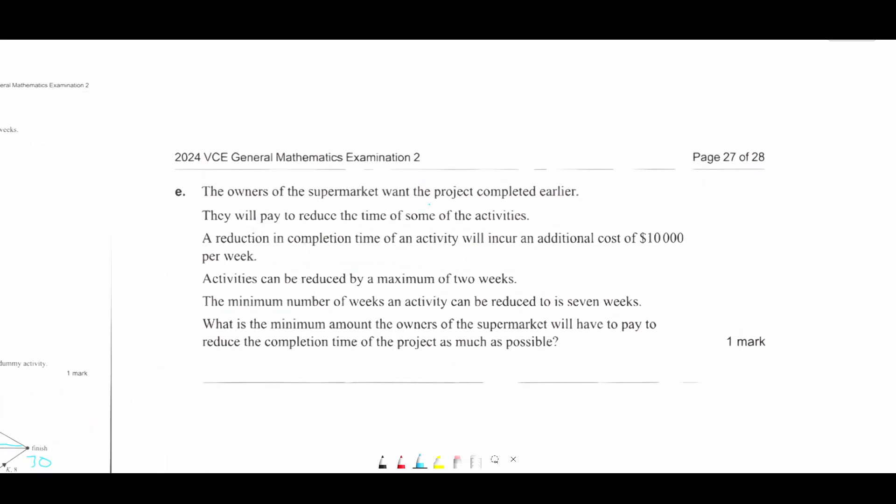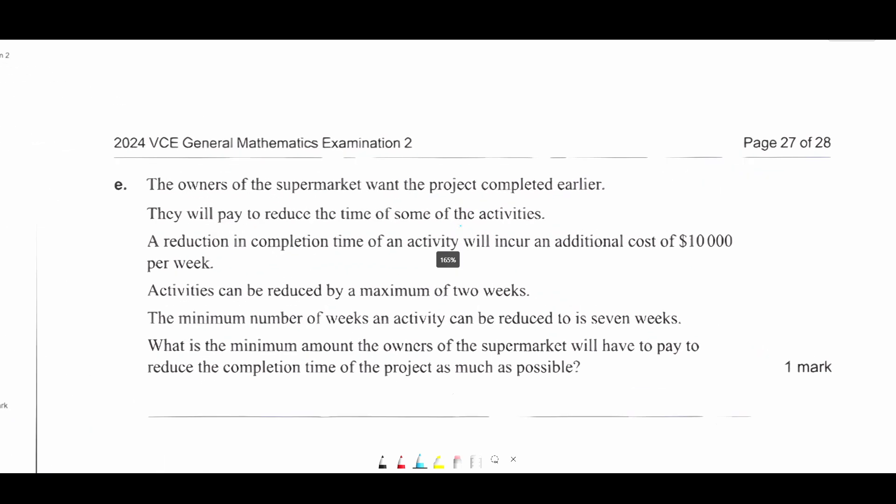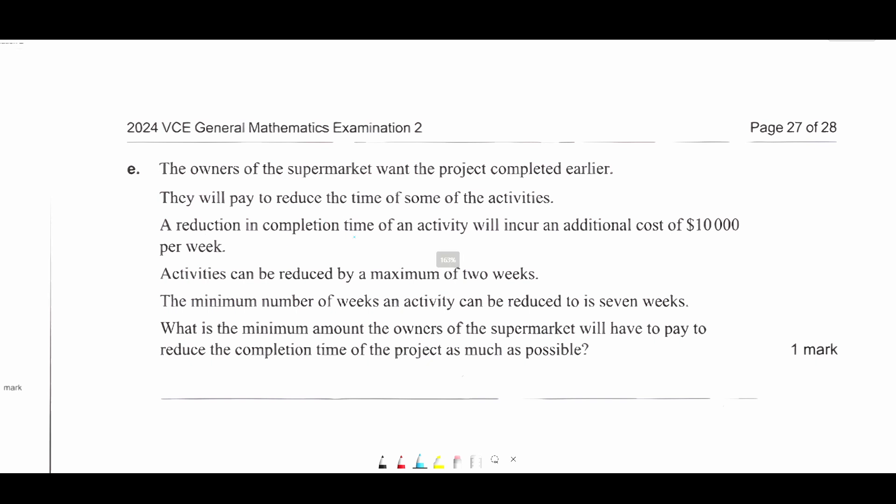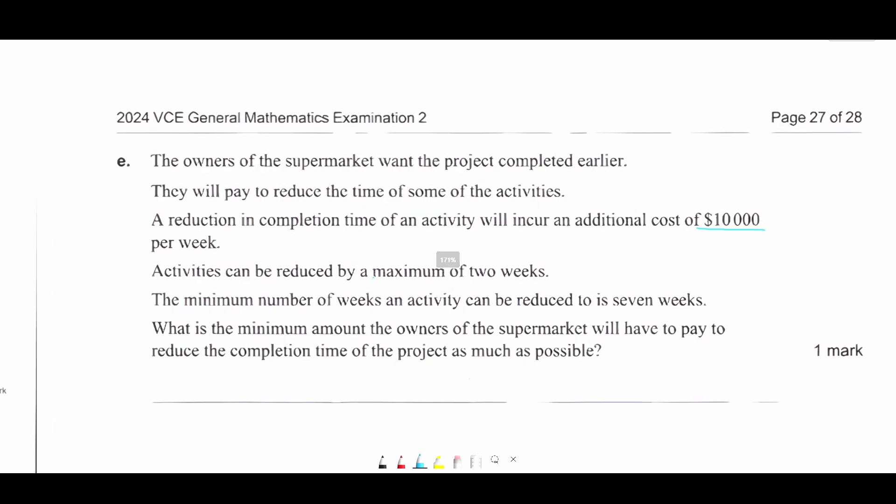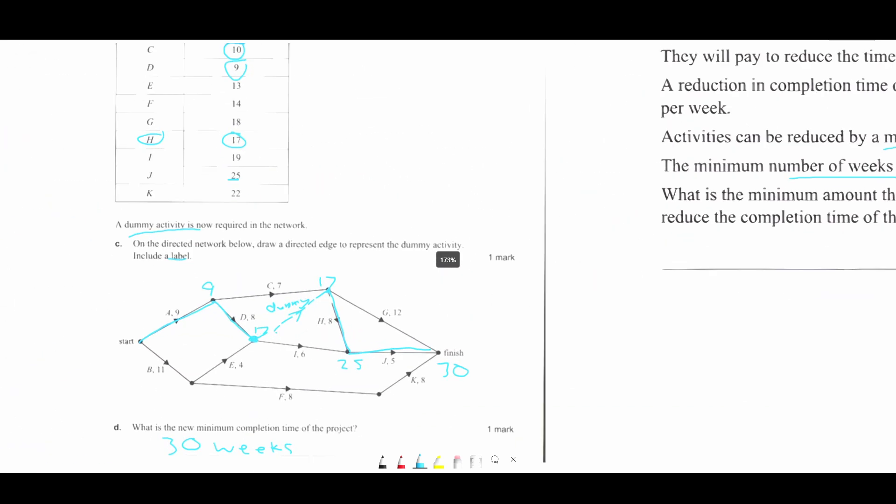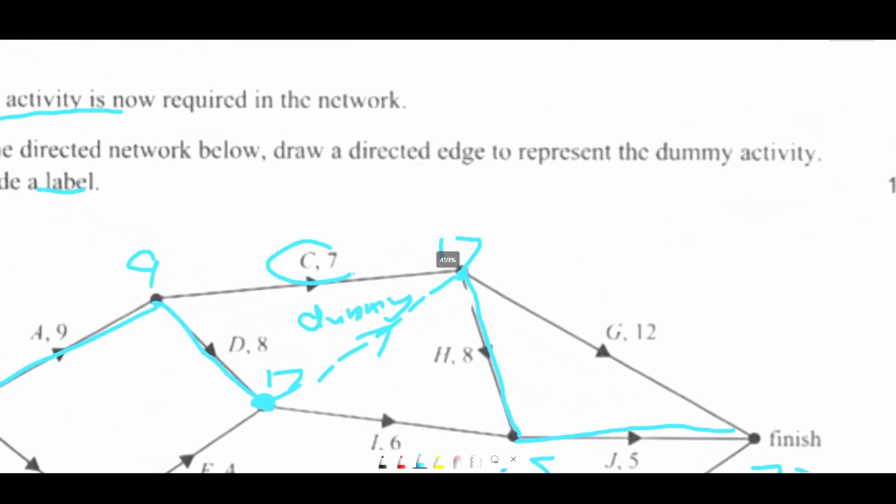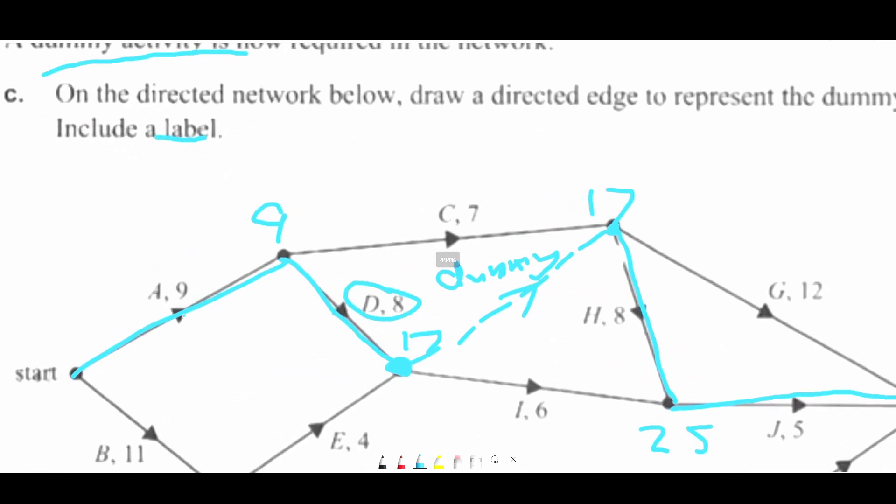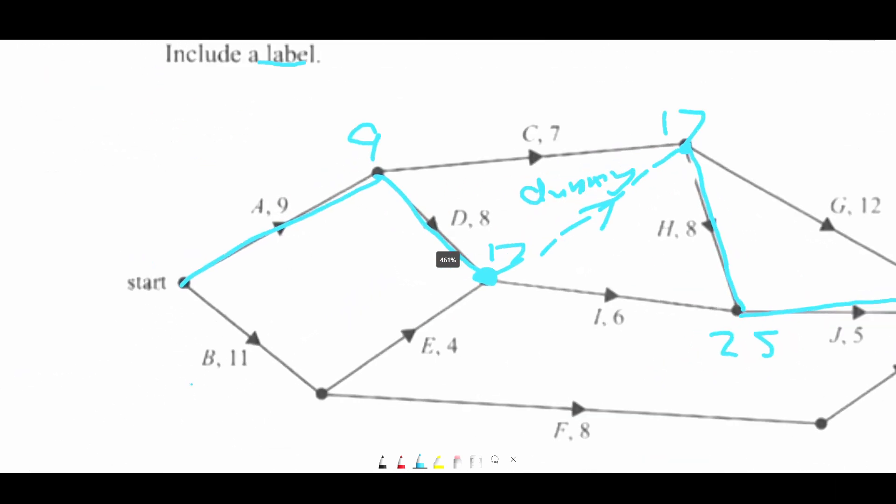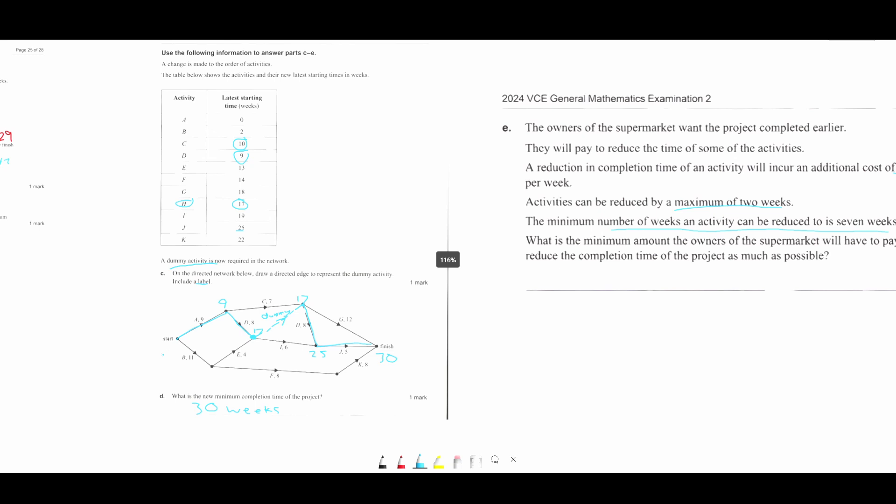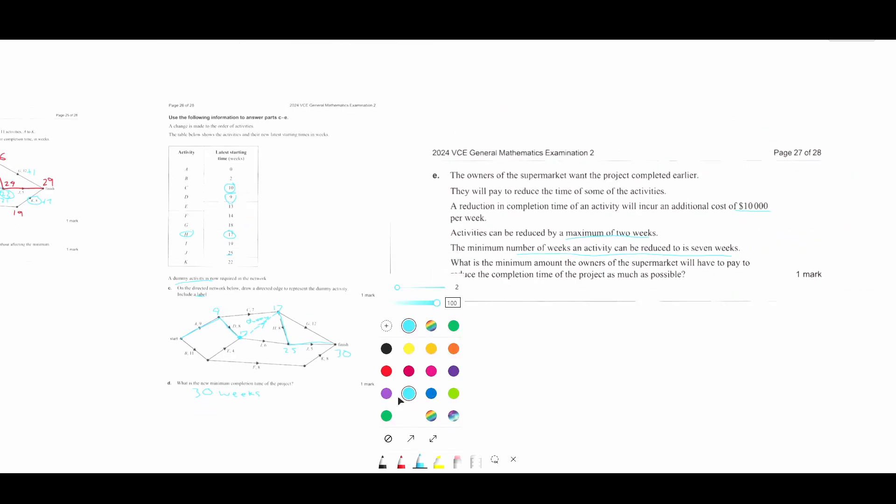The owners want the project to be completed earlier. They will pay to reduce. A reduction in completion time of an activity will incur $10,000. Activities can be reduced by a maximum of two weeks. The minimum number of weeks that they can be reduced to is seven weeks. So that means we can't reduce this one. We can reduce this one to seven. We can reduce this one to seven. And they can only all be reduced by two weeks. I'll use a different color. I'll use purple and I'll make it smaller.